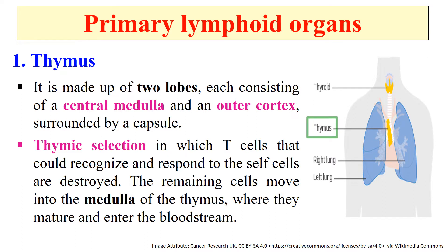First, the primary lymphoid organ — thymus. It is located in the upper front part of our chest and is made up of two lobes, each consisting of a central medulla and an outer cortex surrounded by a capsule. The precursor T cells from the bone marrow migrate into the outer cortex of the thymus where they proliferate and as they mature, about 98% of them die. This is due to the process known as thymic selection, in which the T cells that recognize self cells are destroyed. The remaining 2% of cells move to the medulla of the thymus where they mature and subsequently enter the bloodstream.